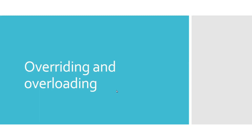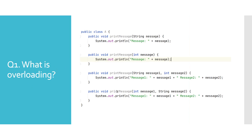The first question: what is overloading? Overloading is a concept where you can have multiple methods with the same name but a different method signature in a single class. Method signature involves the name of the method, number and types of parameters, but it does not include return type.